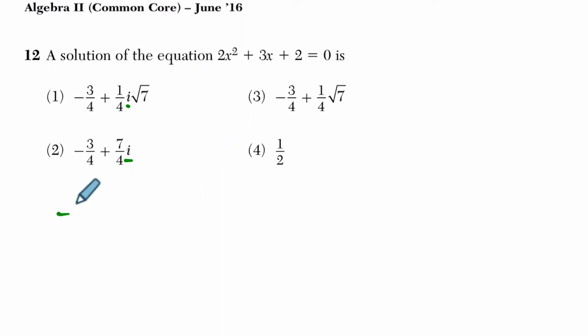So remember the quadratic formula is negative b plus or minus the square root of b squared minus 4ac over 2a.